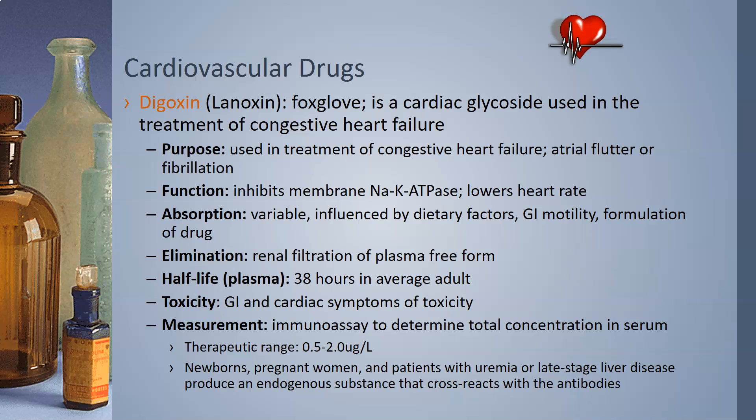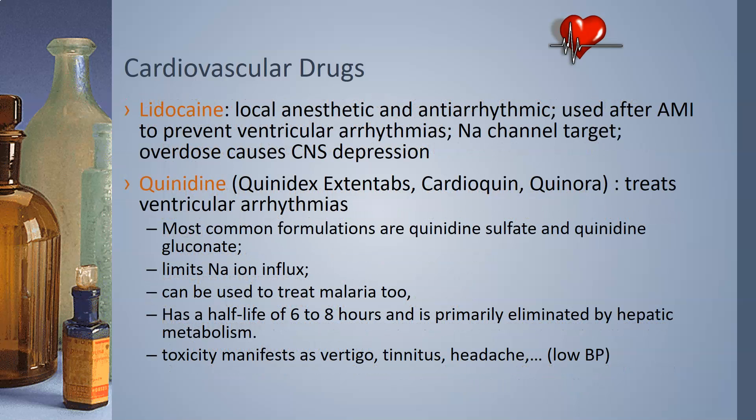The therapeutic range for digoxin is 0.5 to 2.0 micrograms per liter. It is worth noting that newborns, pregnant women, and patients with uremia or late-stage liver disease can produce endogenous substances that will cross-react with the antibodies and interfere with the digoxin assay.